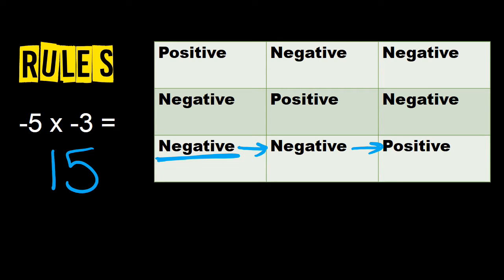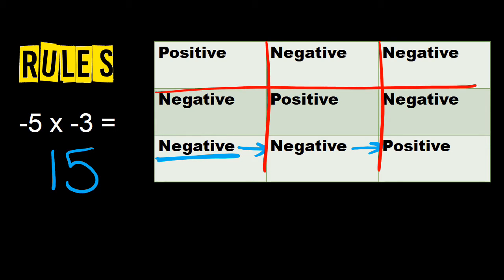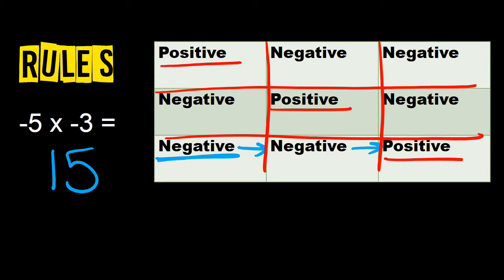If you're confused, pause the video and rewind to the beginning. Make sure this chart is filled out correctly. Draw out your tic-tac-toe board — the positives are located in the diagonals, so positive times positive equals a positive. Then fill in everything else with negatives. You can then use this chart for multiplication.